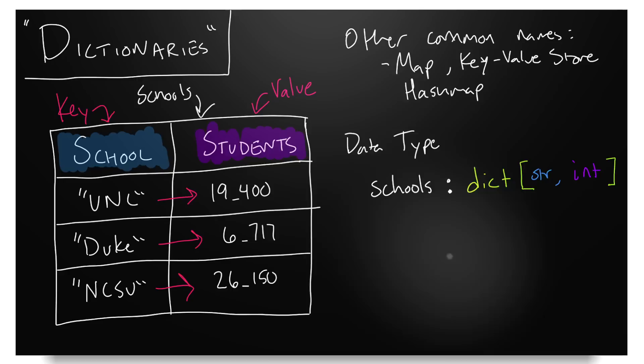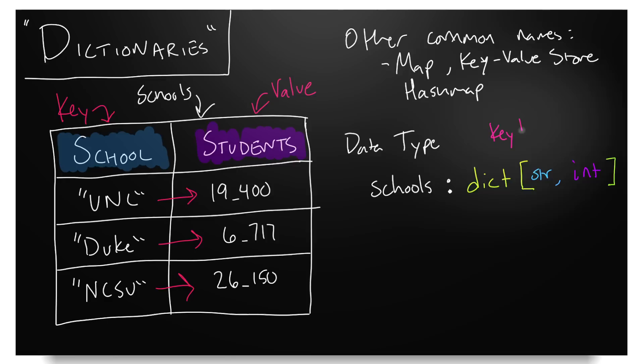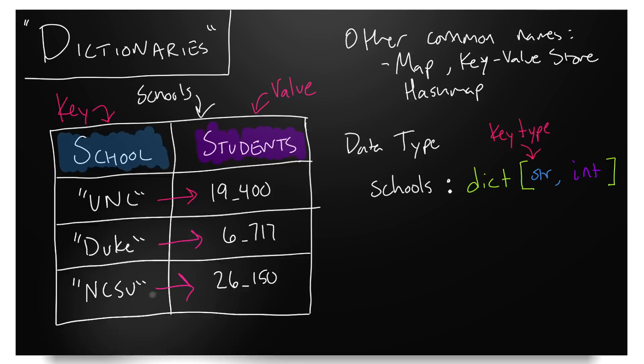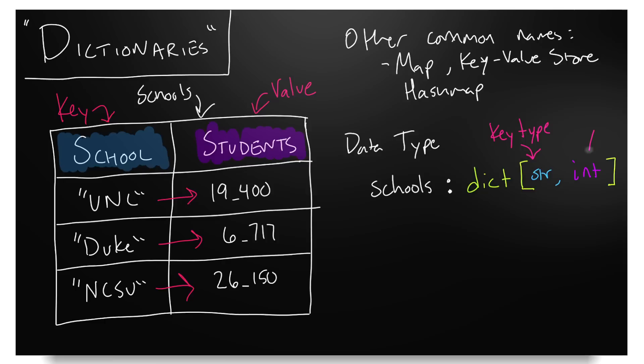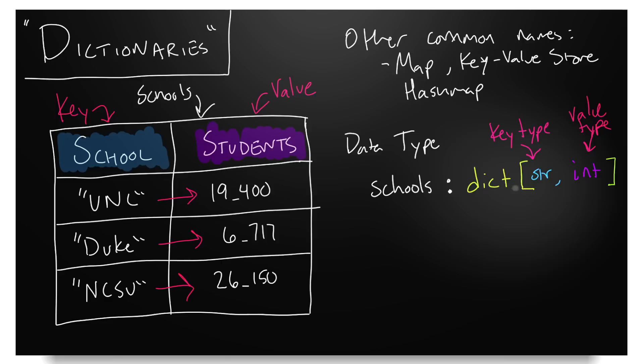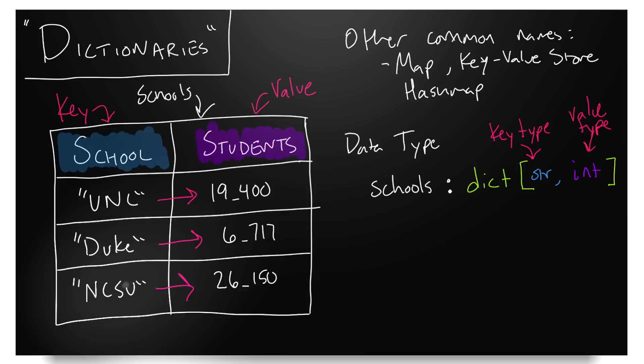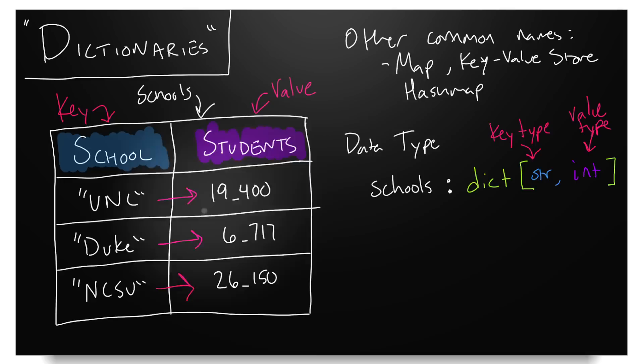This is a fundamental difference from a list: here we're specifying the key type and the value type. These are called type parameters because we're parameterizing the type of this dictionary. So 'schools' is a dictionary where the keys must be strings — those are what we look up — and the values associated with those keys must be integers.